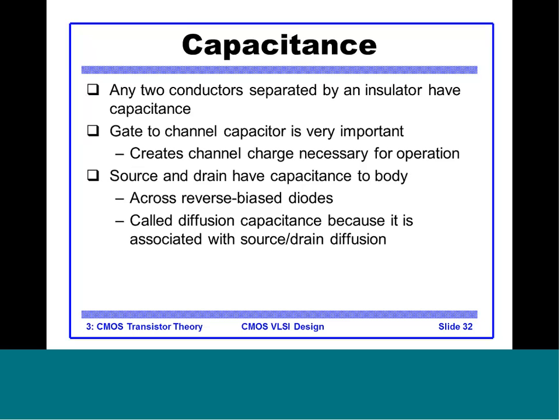Now let us look at what capacitances are exhibited by a MOS transistor. In practice, any two conductors separated by an insulator will exhibit some capacitance. The gate-to-channel capacitance is most important because it creates the channel charge necessary for MOS operation. However, the source and drain — being n+ regions — exhibit capacitance to the body through reverse-biased diodes. These are called diffusion capacitances and they are undesirable.